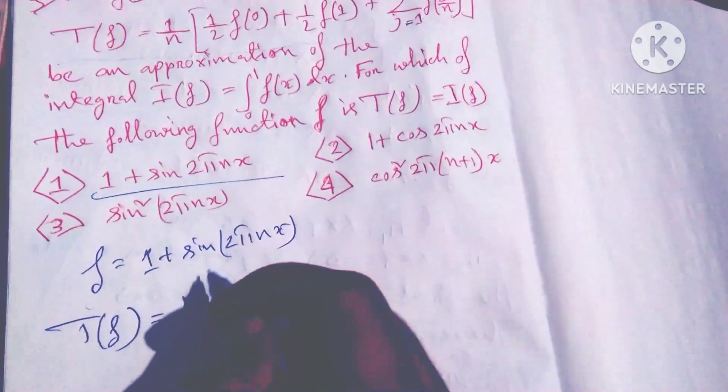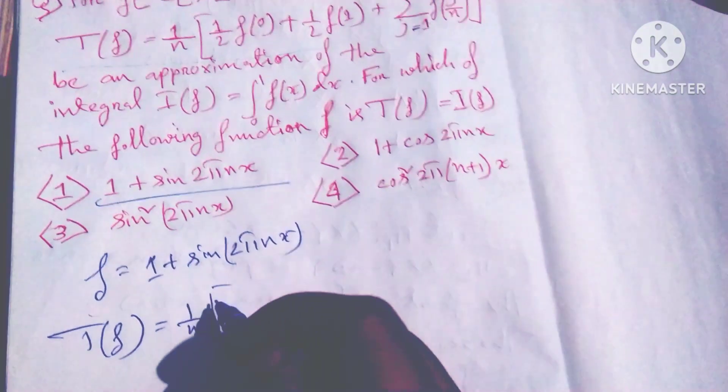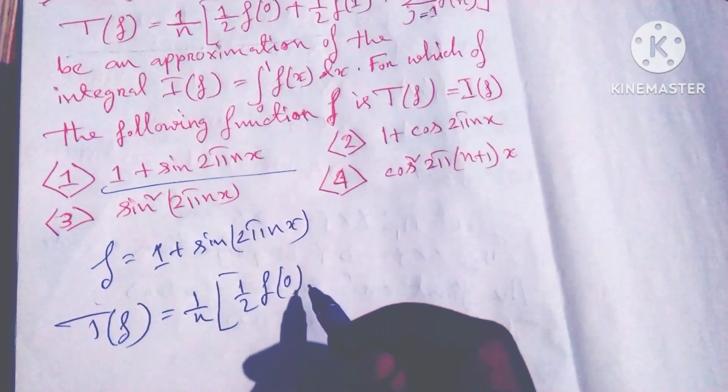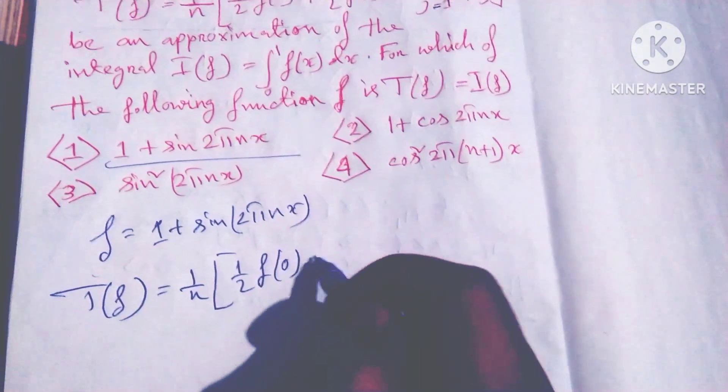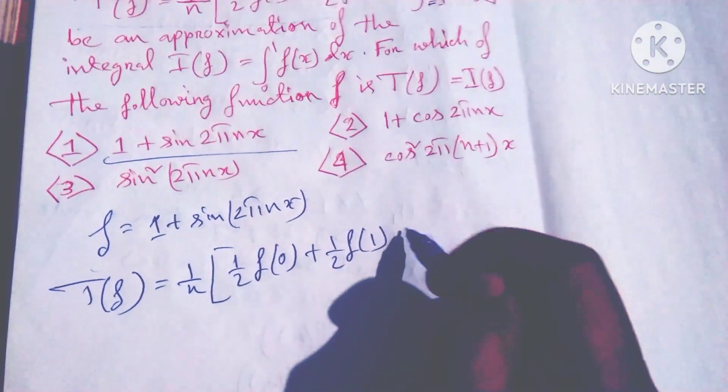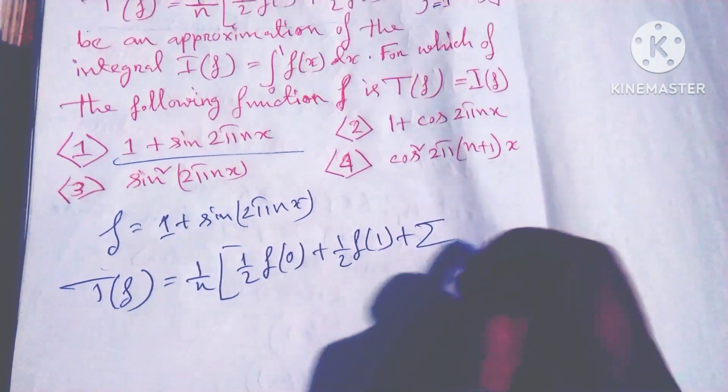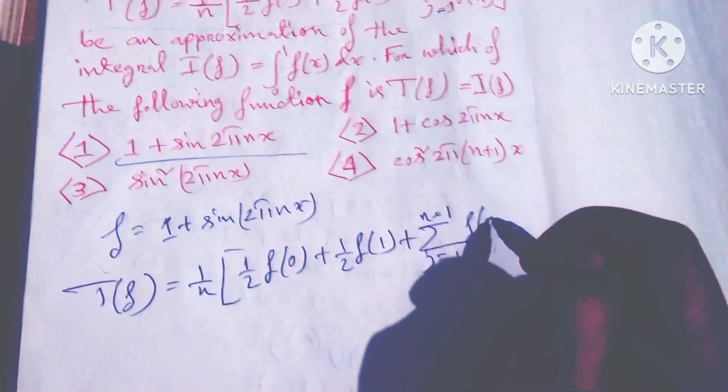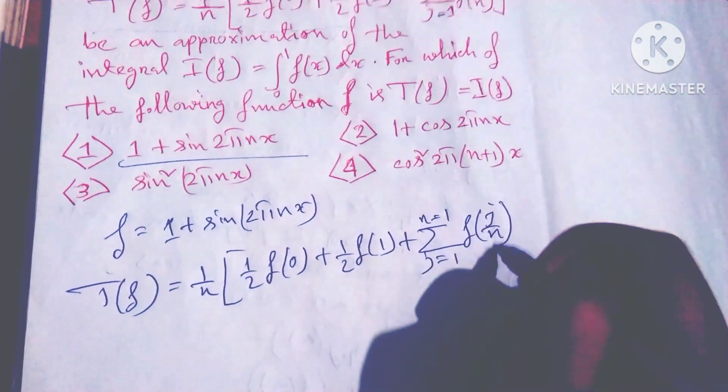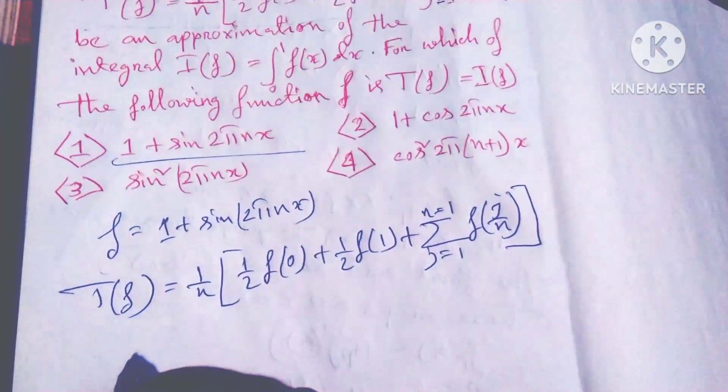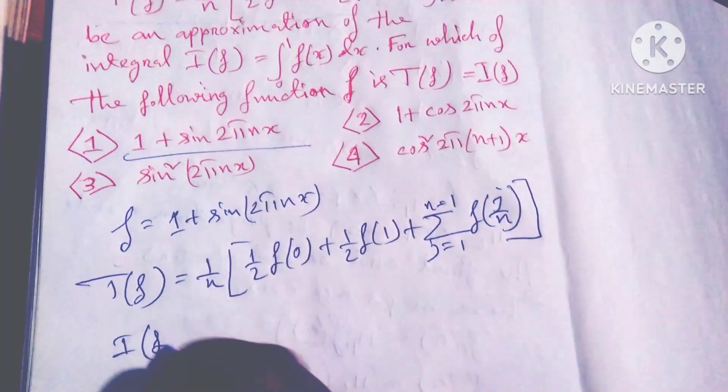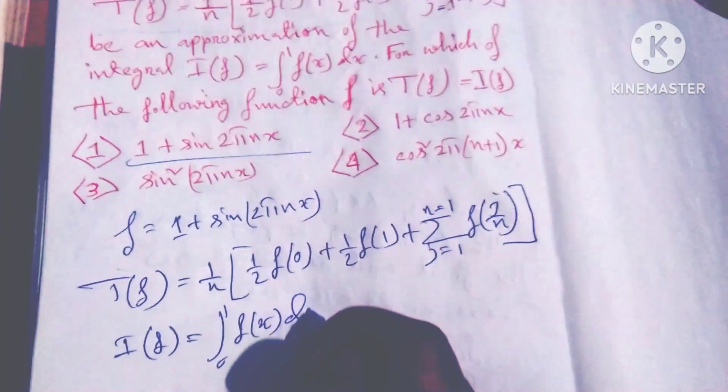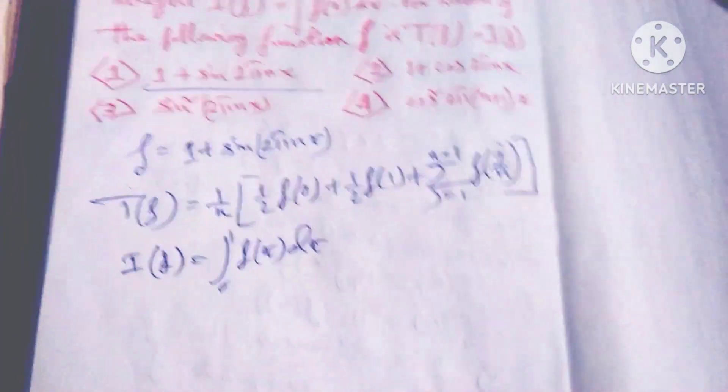T(f) equals 1 by n times [½f(0) plus ½f(1) plus summation from j equals 1 to n minus 1 of f(j/n)], and I(f) is equal to the integral from 0 to 1 of f(x)dx.